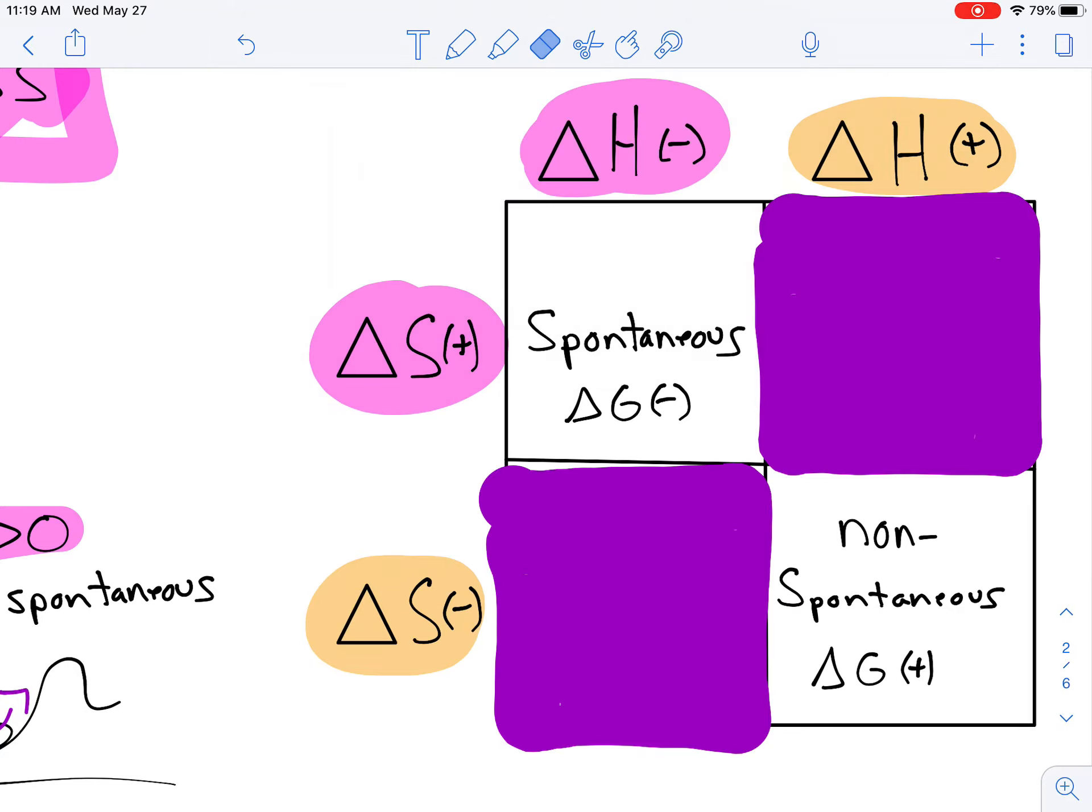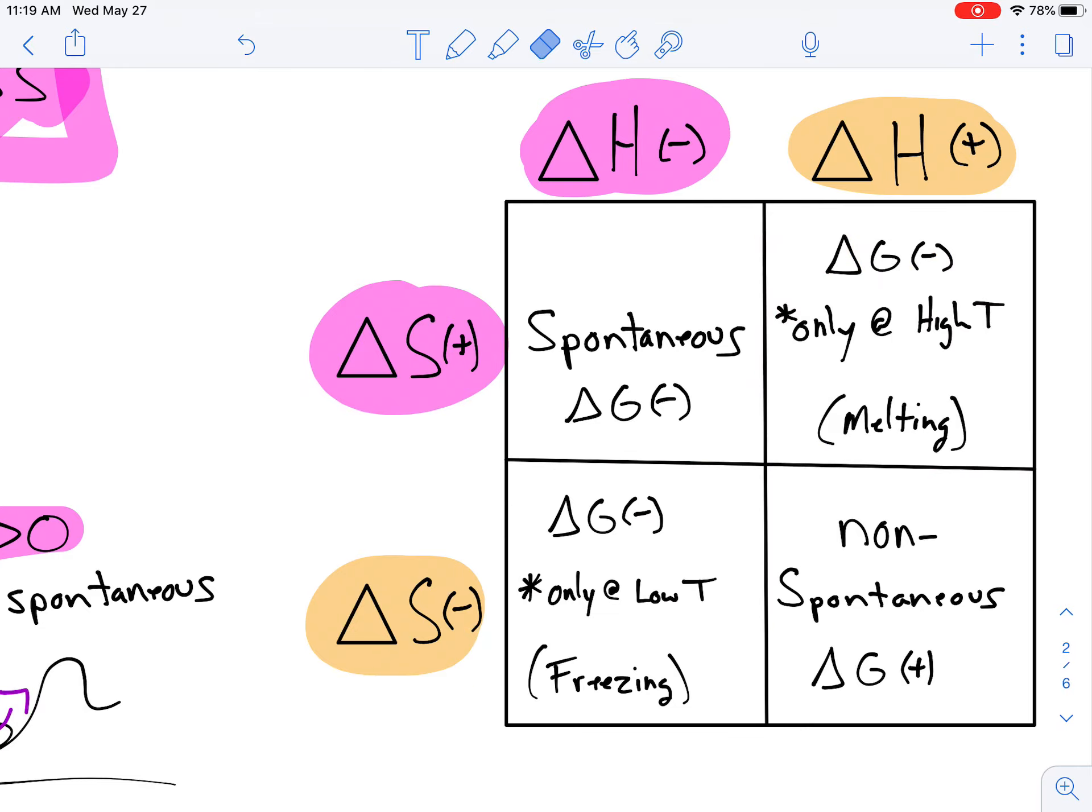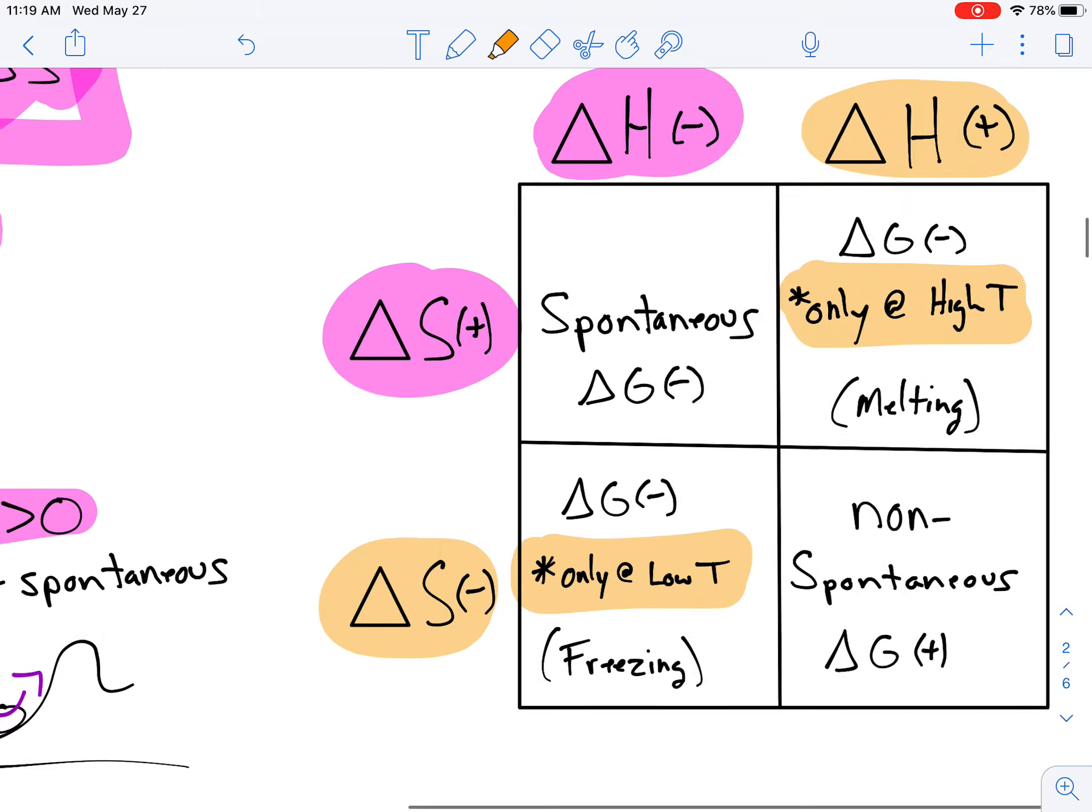Your other two stances here are you have one thing that's naturally favored and one thing that's not. If you have one thing that's naturally favored and one thing that's not, that means the system is now controlled by temperature. So, one will only happen at high temperatures and one will only happen at low temperatures. The example here is melting and freezing. That'll make more sense in a second.